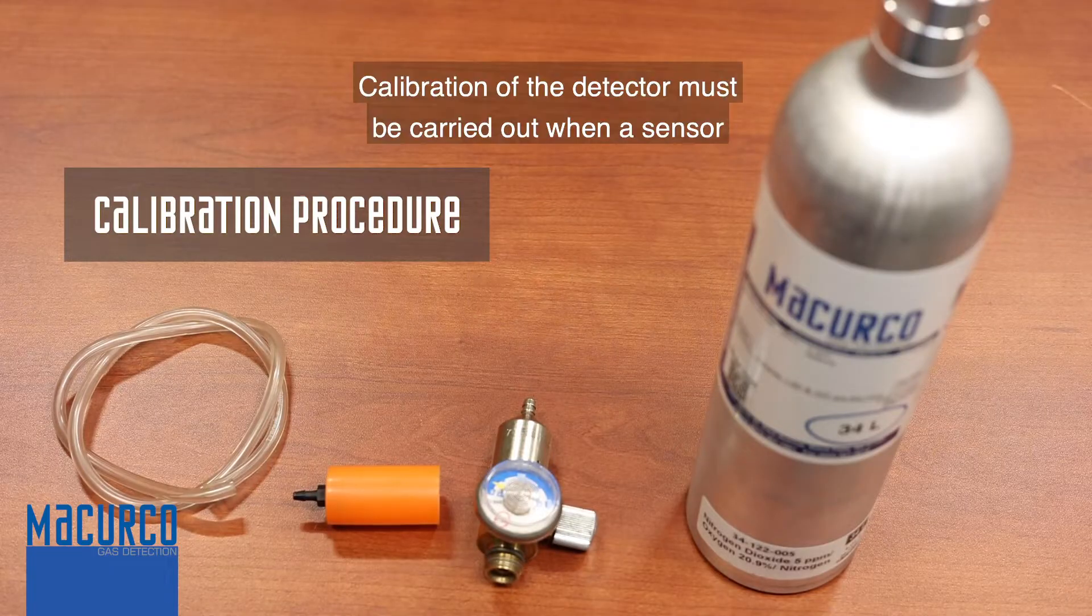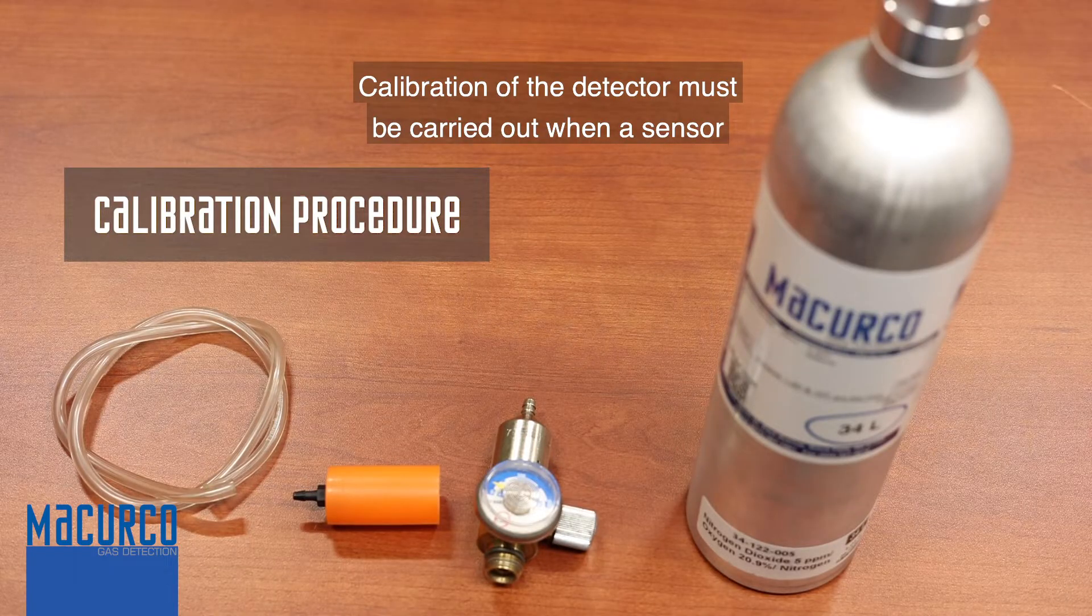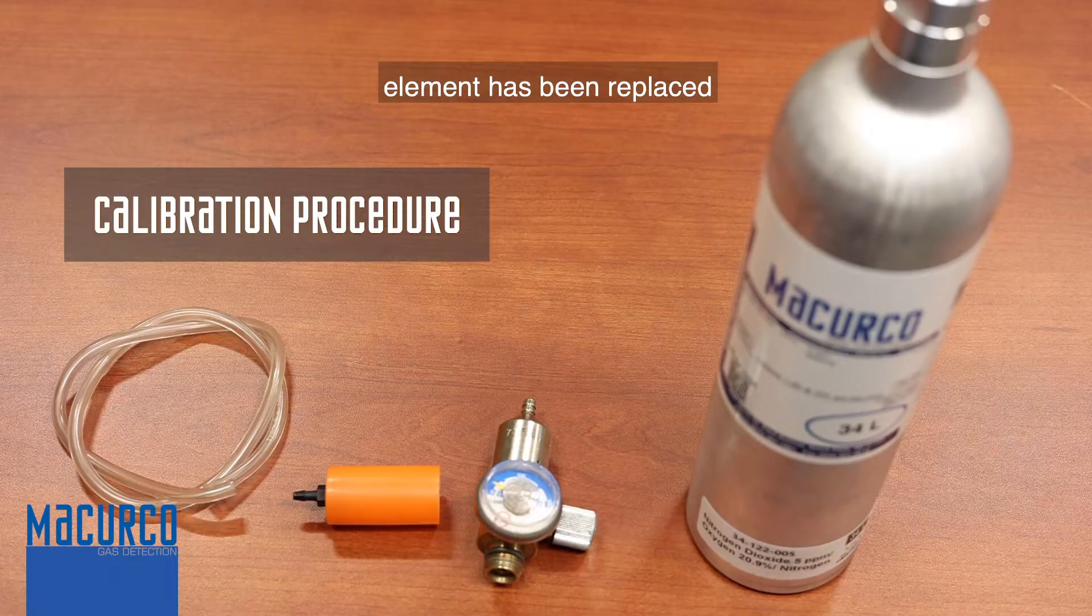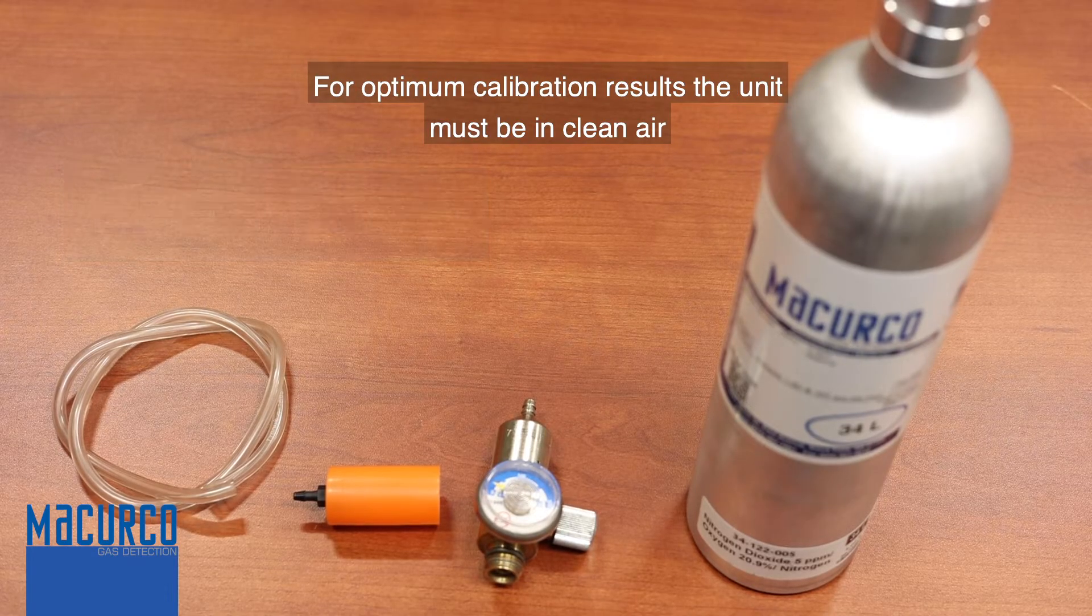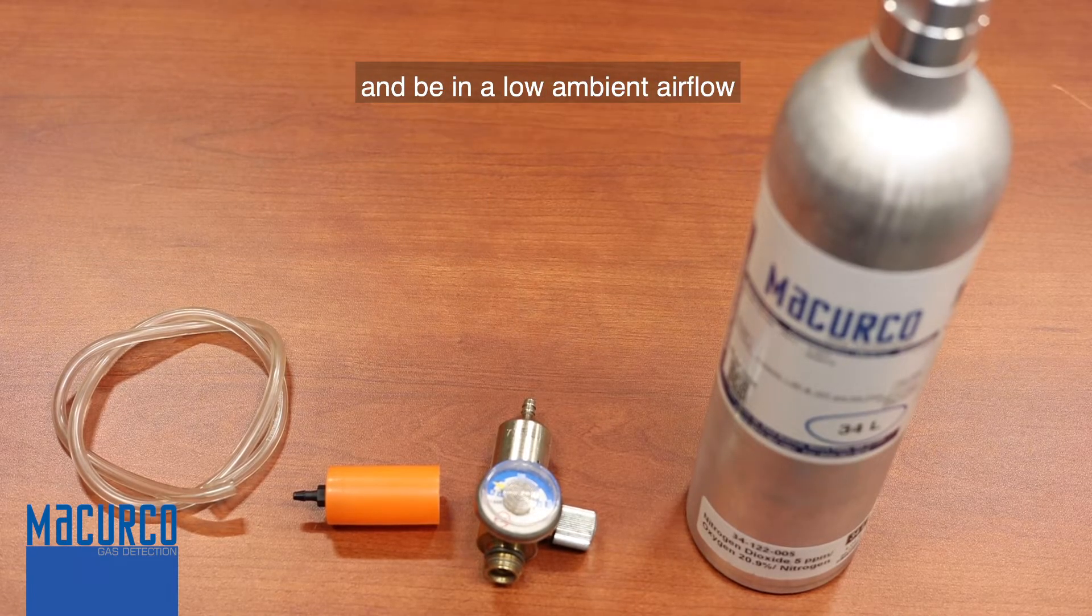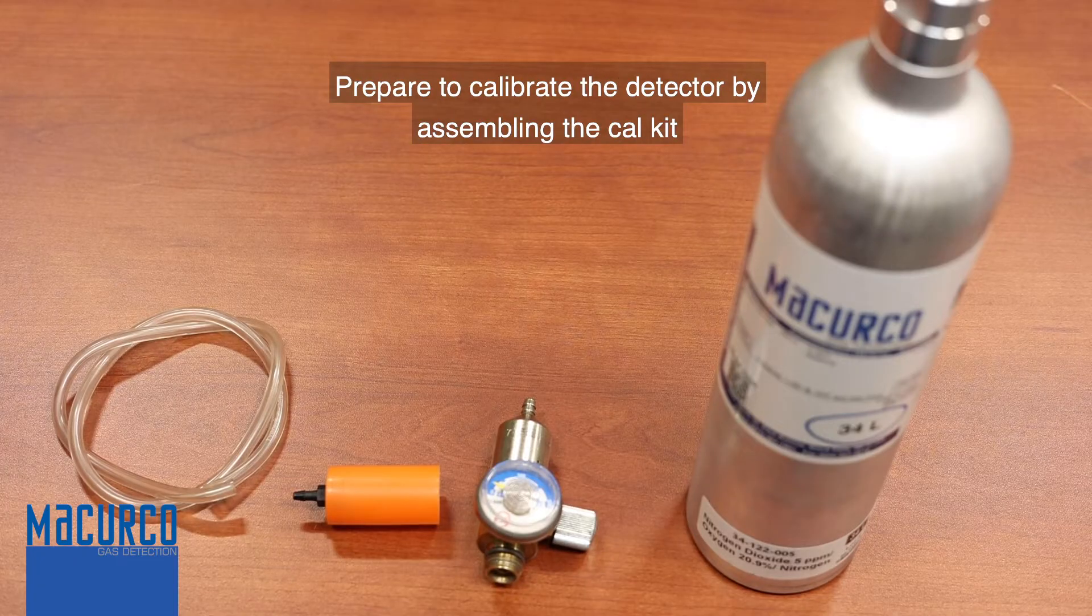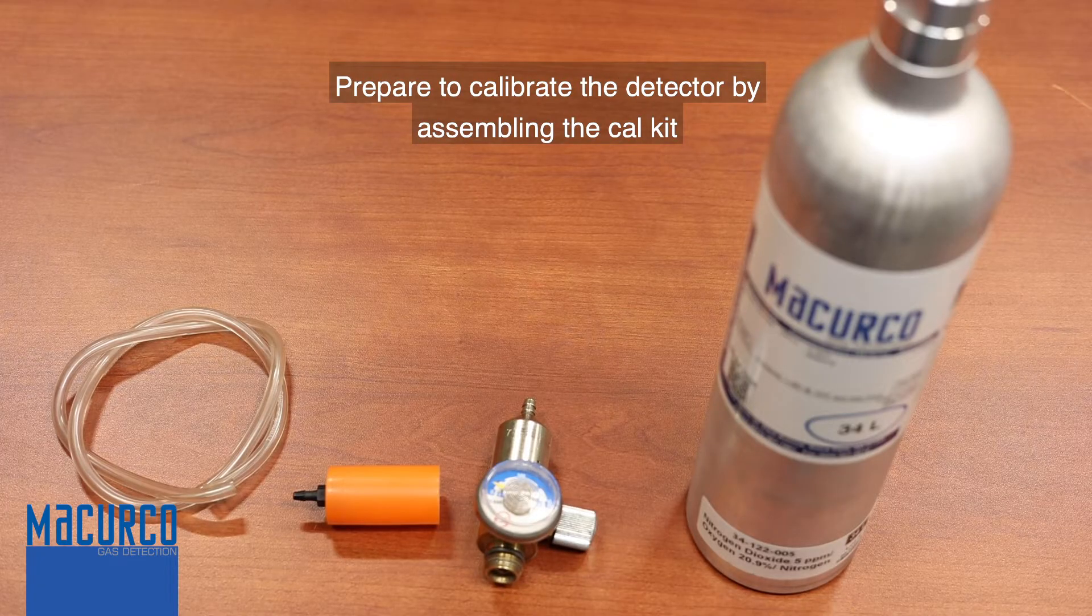Calibration procedure: Calibration of the detector must be carried out when a sensor element has been replaced. For optimum calibration results, the unit must be in clean air and be in a low ambient airflow. Prepare to calibrate the detector by assembling the cal kit.